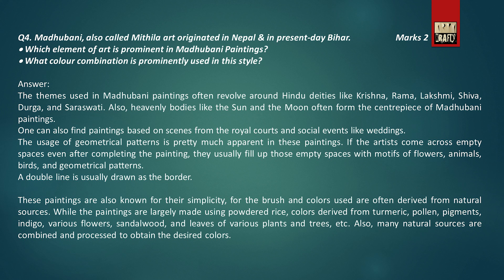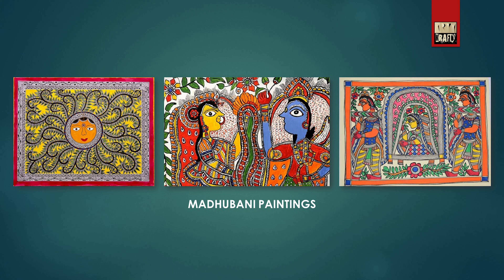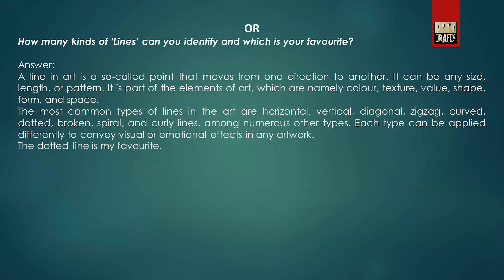In question number four, you have to write about Madhubani painting. These are the three pictures of Madhubani paintings. There is an alternate question: how many kinds of lines can you identify and which is your favourite? In this question, you have to write about the different kinds of lines and your favourite line.